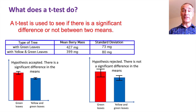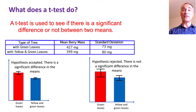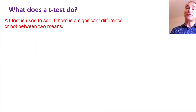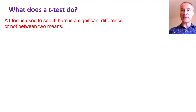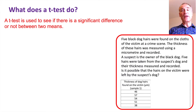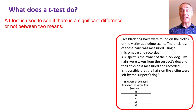We create a null hypothesis and then use a t-test to decide whether there is significance, which is much more accurate than just looking at the standard deviation bars. A t-test is used to see if there's a significant difference or not between two means. Here's a great example: suppose five black dog hairs are found on the clothes of a victim of a mugging.